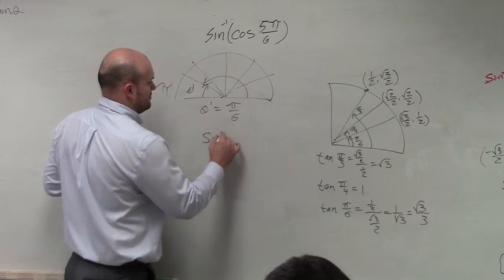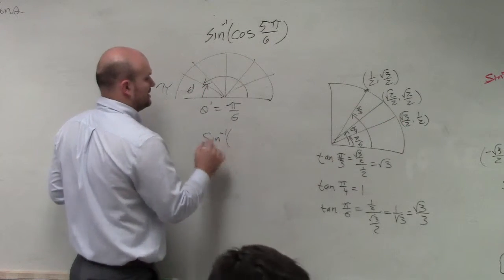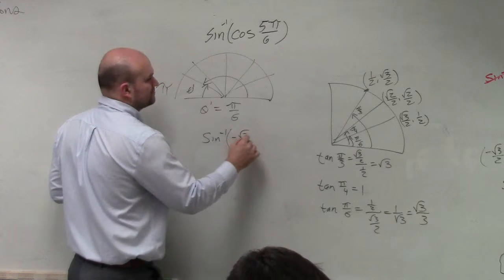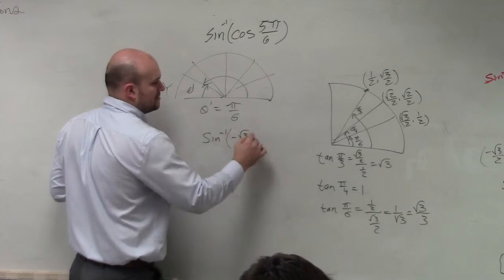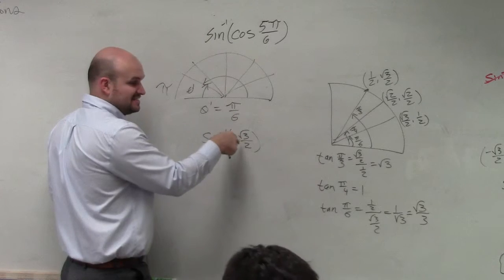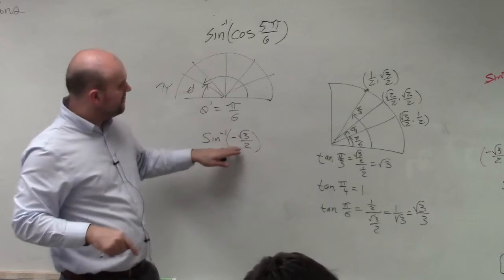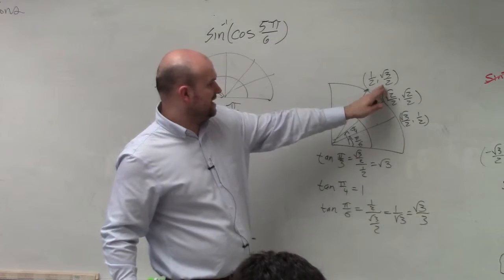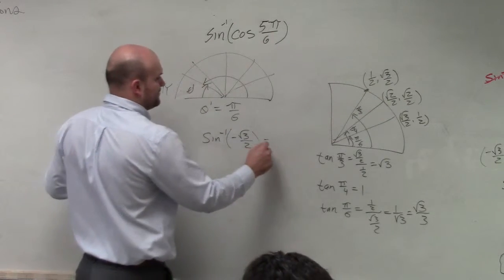Attention seniors: any seniors who still have an economics book, please turn it into the media center and see Mr. Charles as soon as you can. So it's negative in the second quadrant. Sine is there, which is going to be negative square root of 3 over 2.